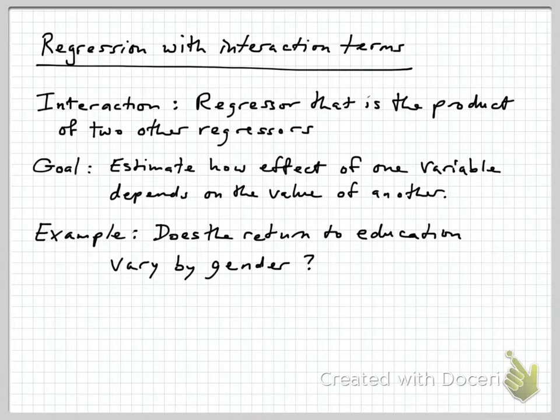Interaction terms are an extremely useful technique in regression analysis for estimating how the effect of one regressor might depend on the value of another regressor.